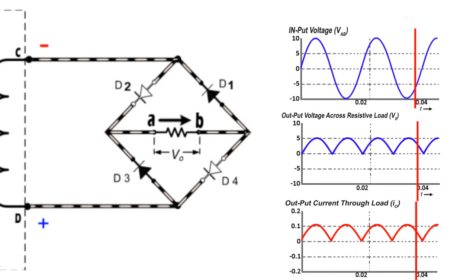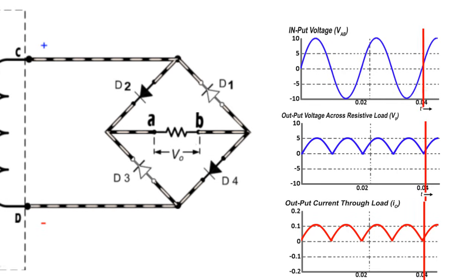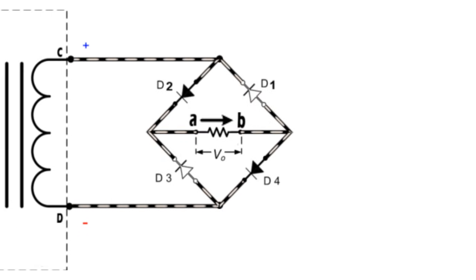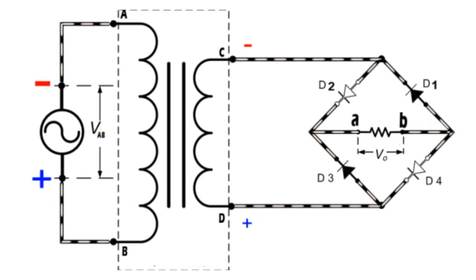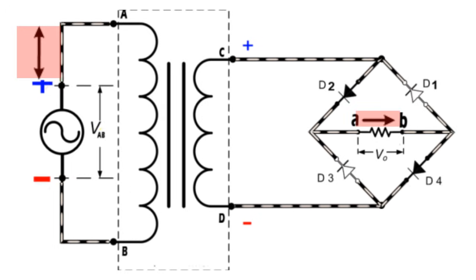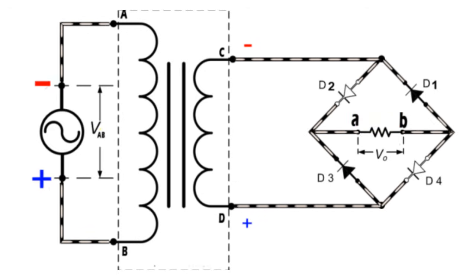This process will continue until any one of the source and load gets disconnected. In this way, the given bi-directional alternating current gets converted into unidirectional DC. Hope this presentation gives you a little bit idea about how full bridge rectifier works.